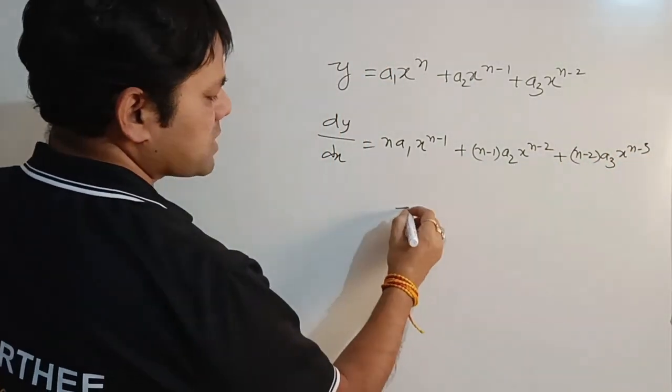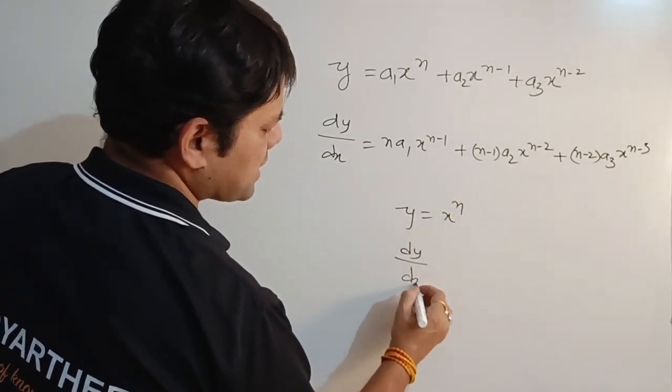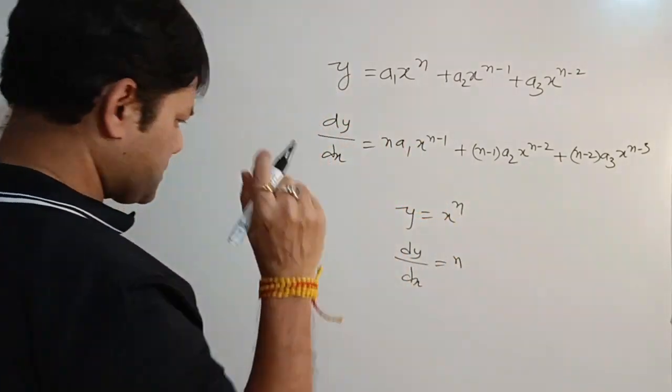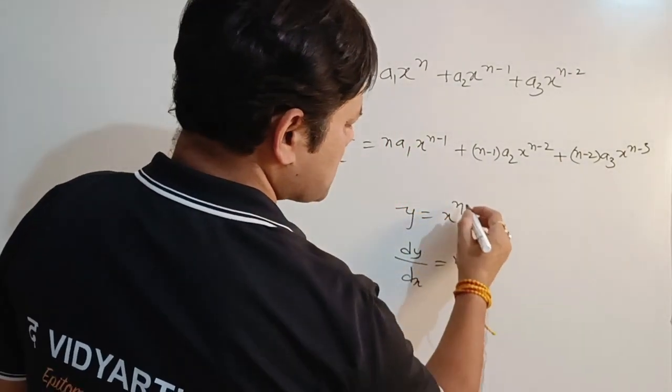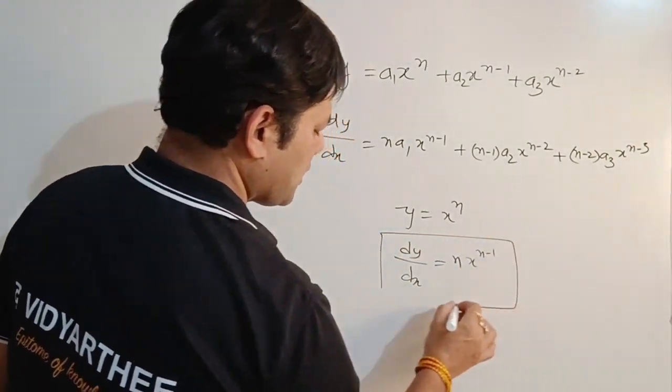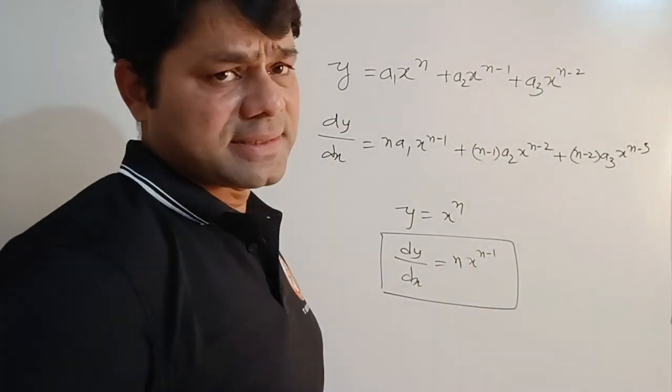What we have used is if y is x to the power n, then dy/dx will be: you multiply the power of x with the coefficient and reduce the power by 1. So this we have used for a given expression. I hope you understand this.